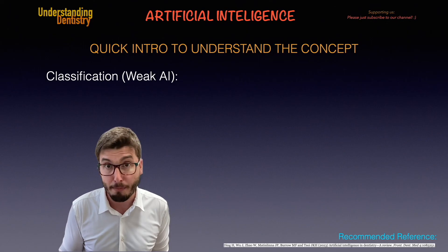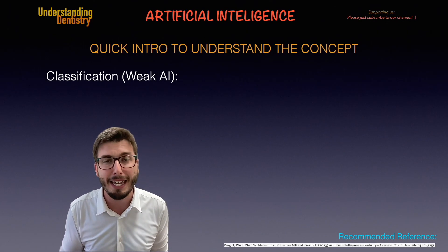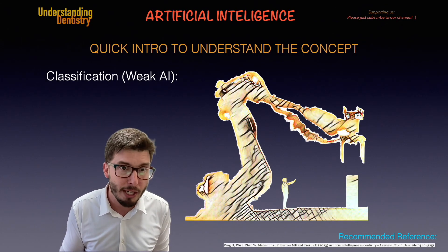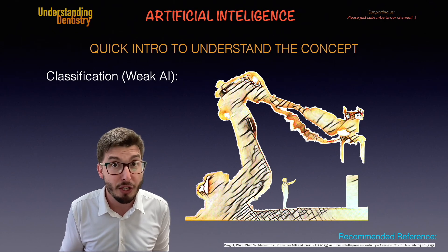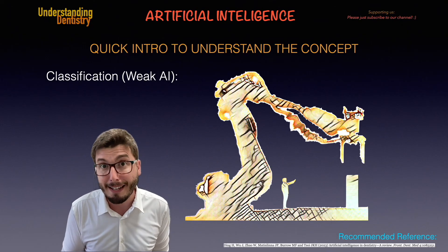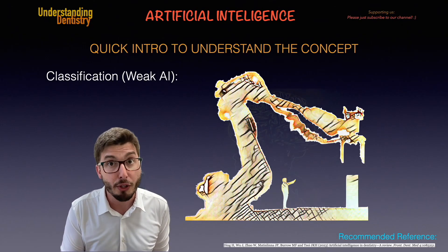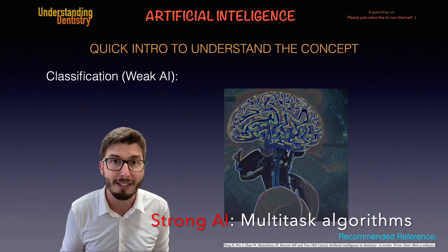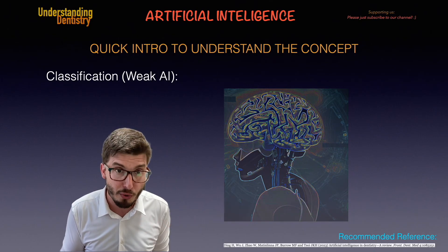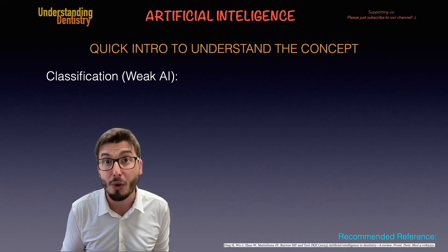We are talking about weak AI, which is basically AI for single tasks or specific tasks, such as moving an object or detecting specific alterations on radiographs. That's the type used in dental research. Strong AI, on the other hand, is not currently being used in dental research because there are still several ethical issues, so that's why we are going to focus on weak AI.